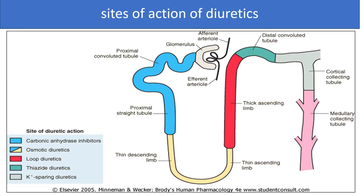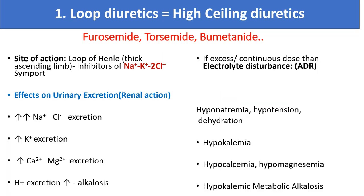The site of action of loop diuretics is the thick ascending limb of the loop of Henle. Loop diuretics are also called high-ceiling diuretics. They inhibit the sodium-potassium-2-chloride symporter, ultimately inhibiting reabsorption of sodium, chloride, potassium, calcium, magnesium and hydrogen. This ultimately increases the excretion of all these electrolytes, which can result in hyponatremia, hypotension, dehydration, hypokalemia, hypocalcemia, hypomagnesemia, and hypokalemic metabolic alkalosis, especially with continuous excessive use.